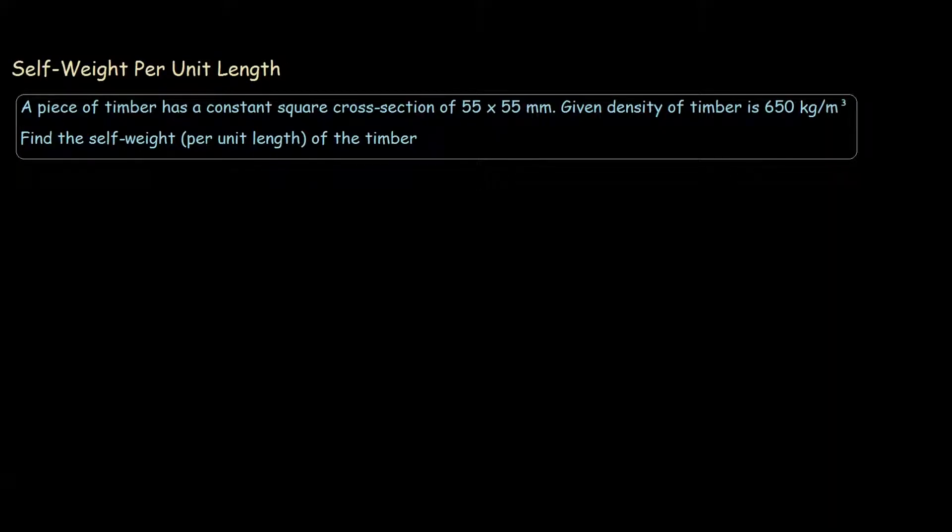We have a self-weight per unit length problem. A piece of timber has a constant square cross-section of 55 by 55 millimeters. Given the density of timber is 650 kilograms per meter cubed, we are asked to find the self-weight per unit length of the timber.